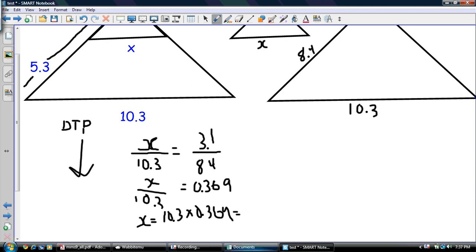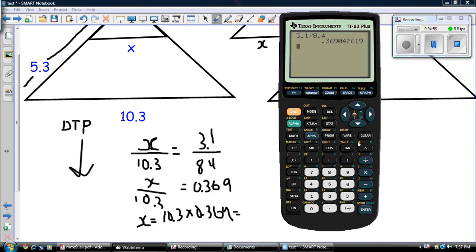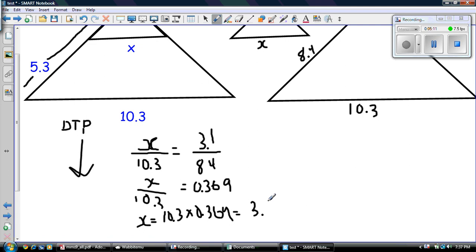And we'll do that on our calculator. So 10.3 times 0.369, and that equals 3.8, we'll say. So that equals 3.8, and I don't have any units in the processor, so we'll just write units.